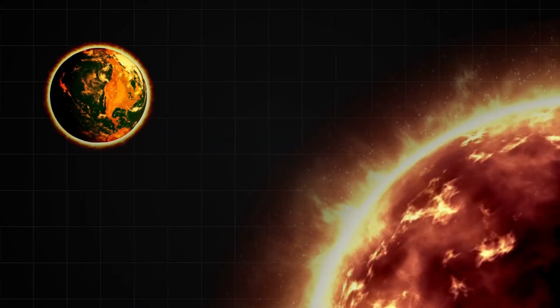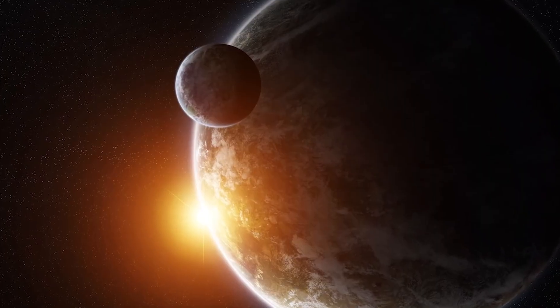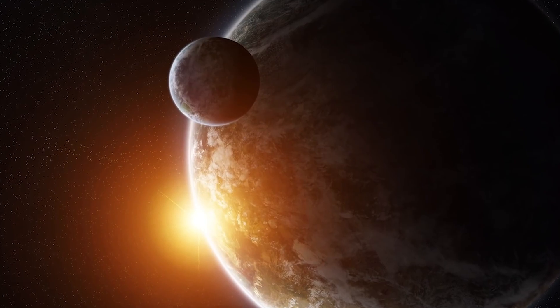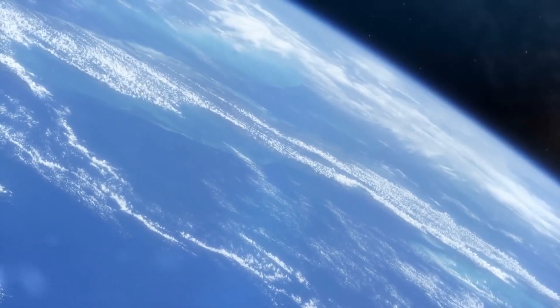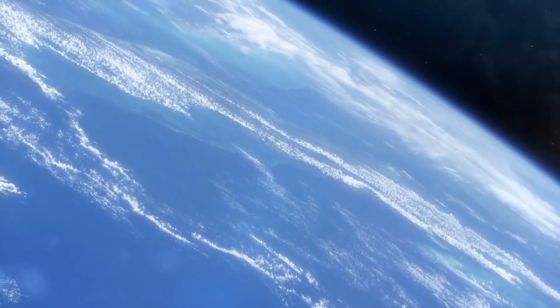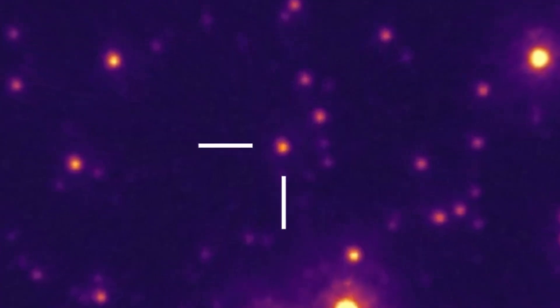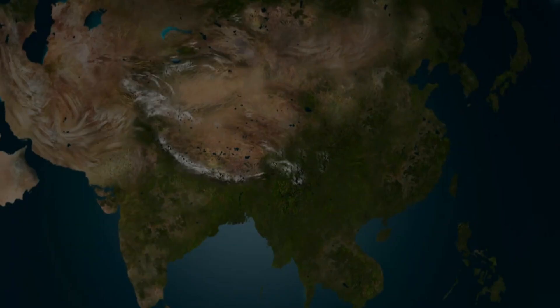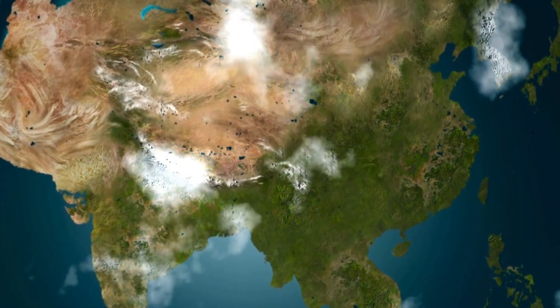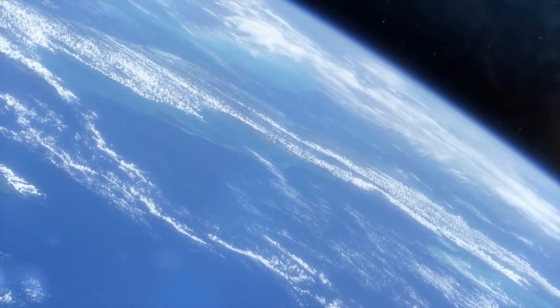As the sun expands, it will lose a significant amount of its mass, causing the remaining planets, including Earth, to drift outward. If Earth manages to escape being engulfed by the sun's outer layers, it could end up in a much larger orbit, similar to the Earth-sized planet found in the recently discovered system.